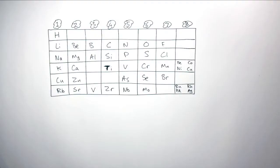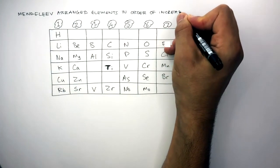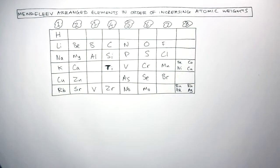This is Mendeleev's periodic table and Mendeleev arranged the elements in order of increasing atomic weights, also known as masses.